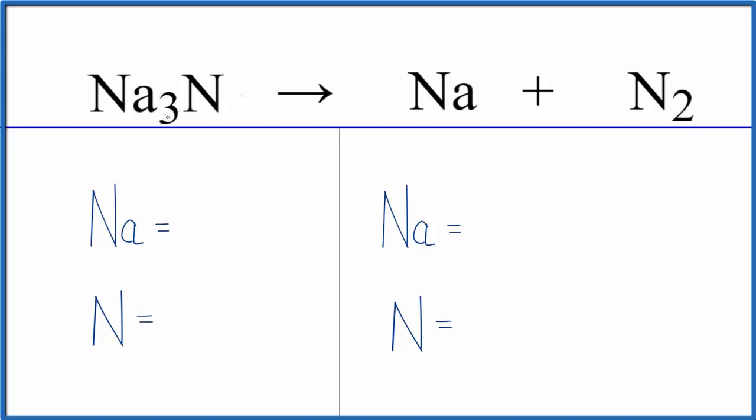To balance it, let's count the atoms. We have three sodium atoms and one nitrogen atom on the reactant side. On the product side, we have one sodium and two nitrogen atoms.